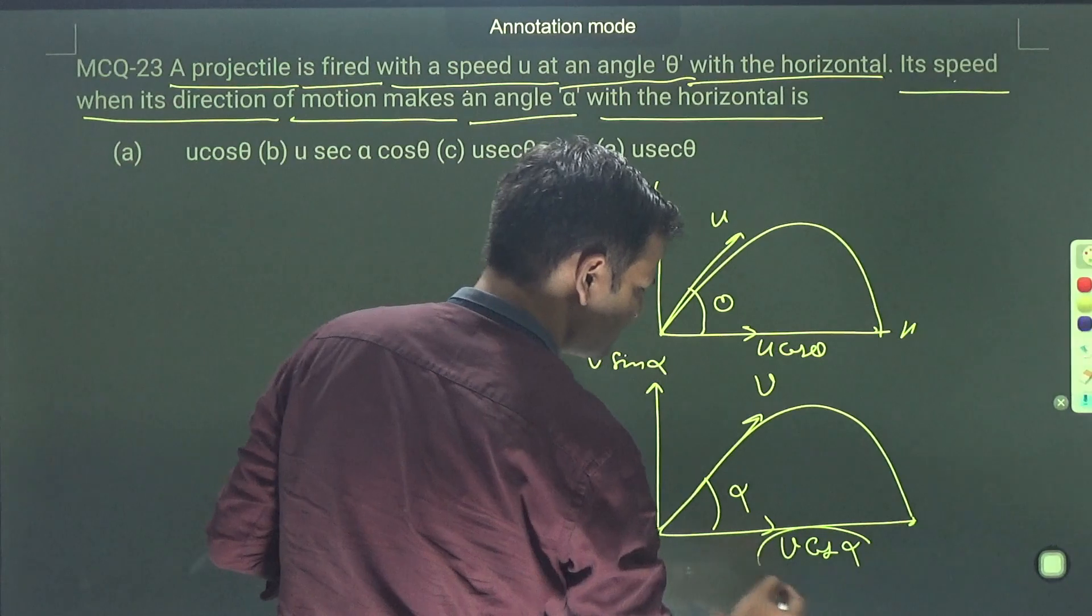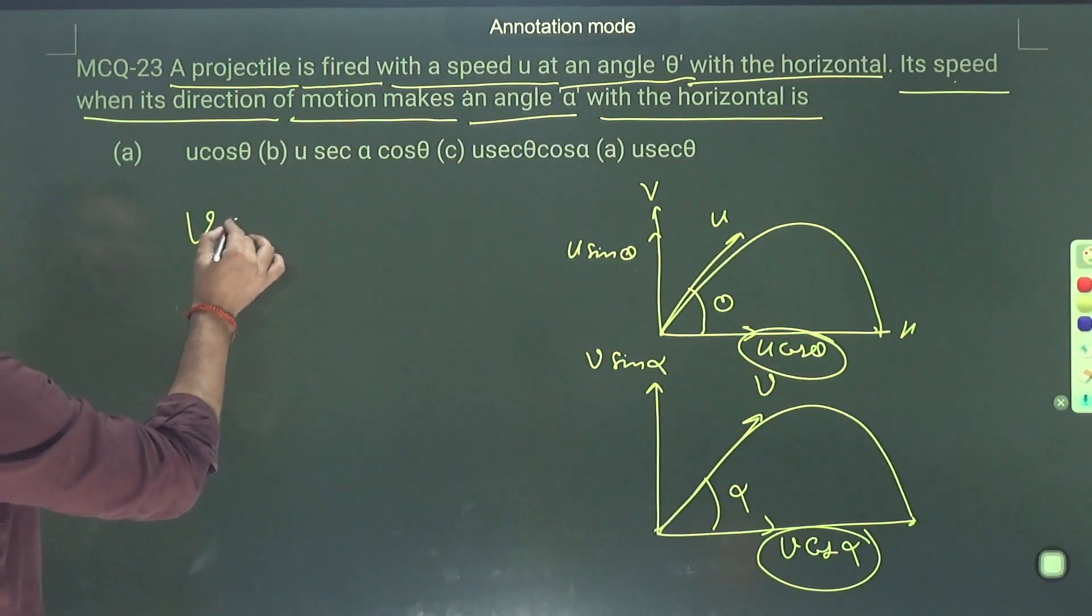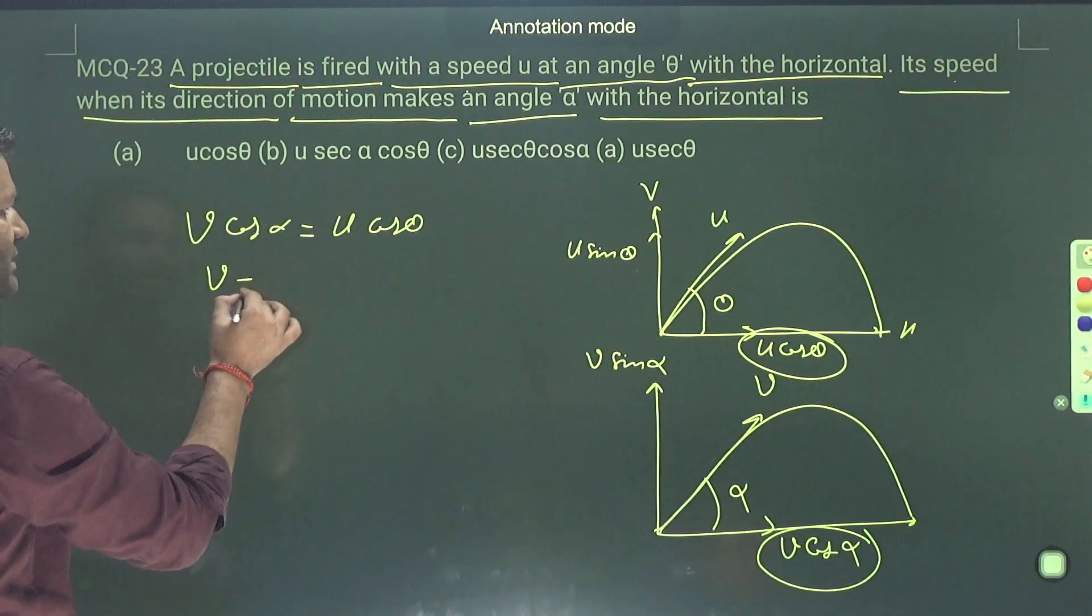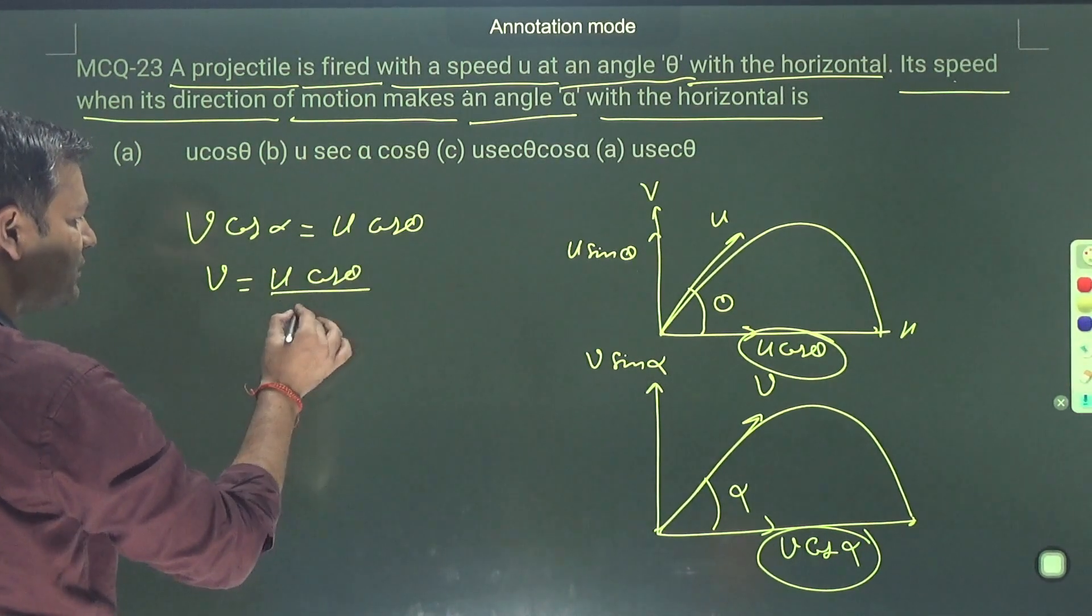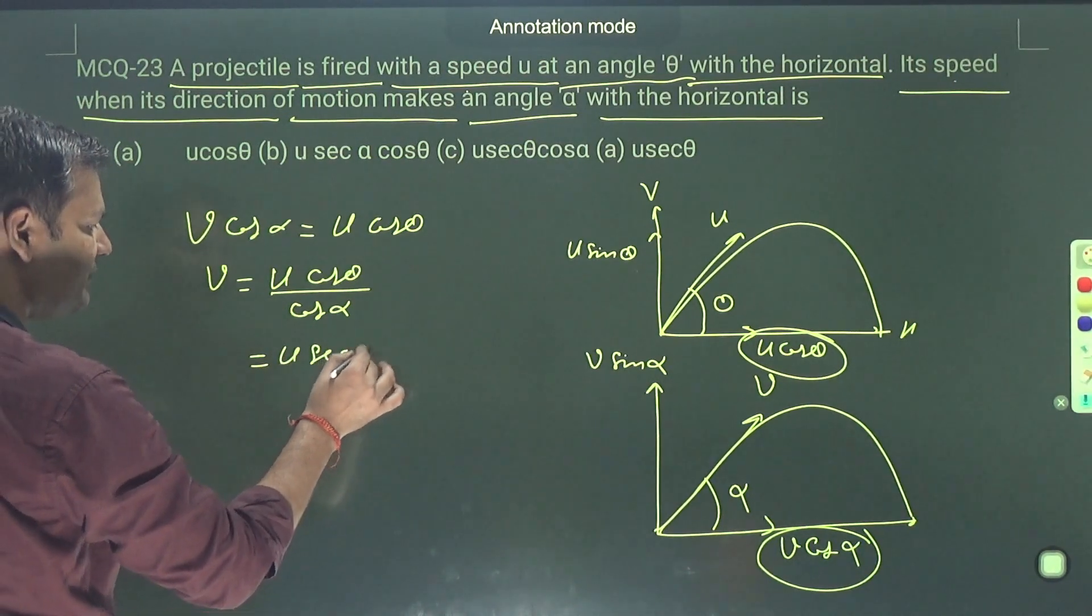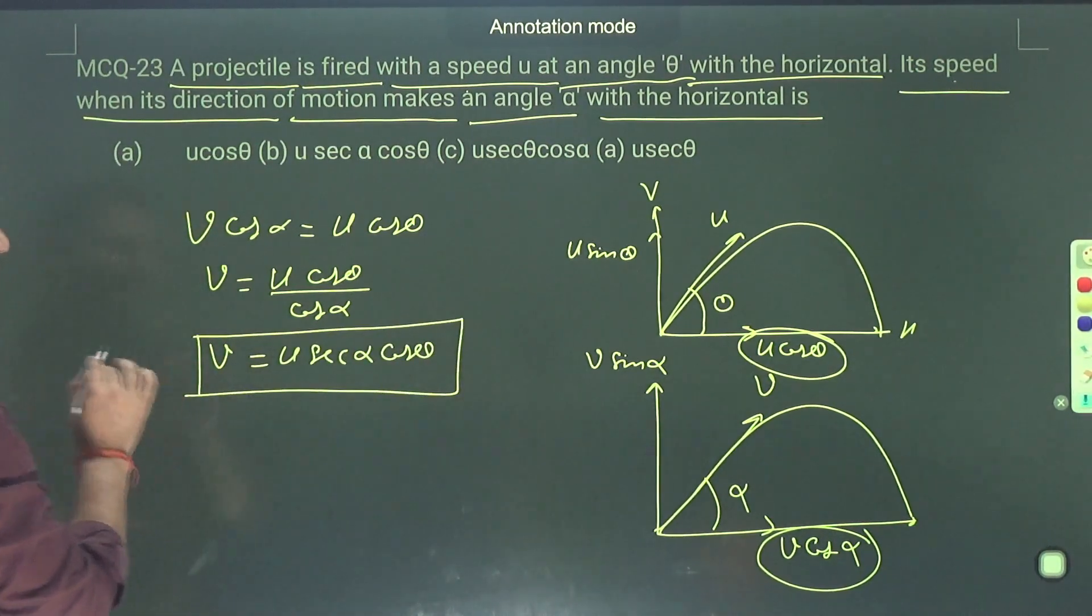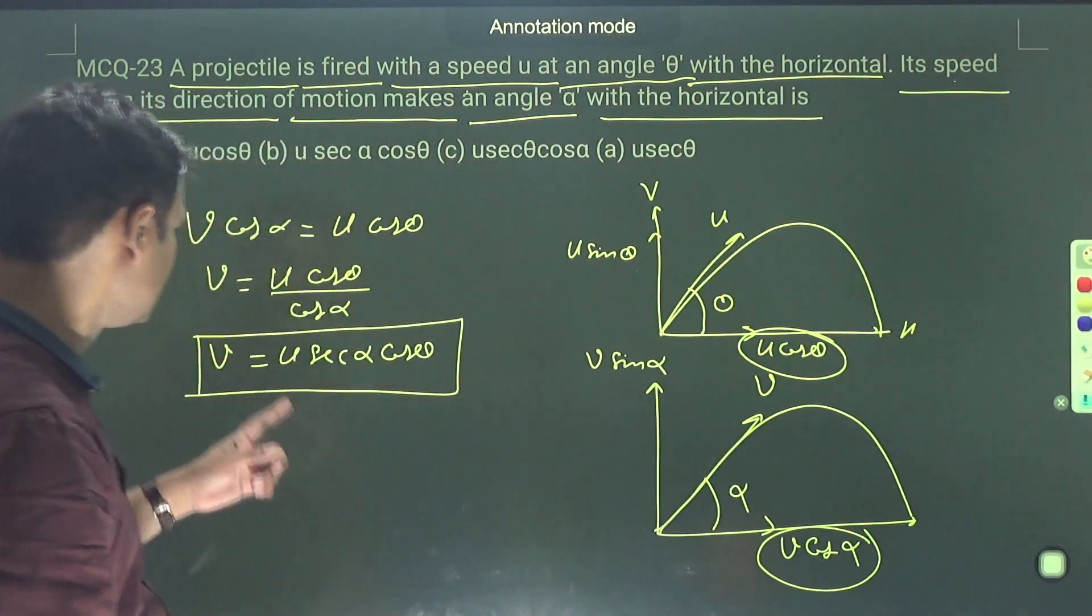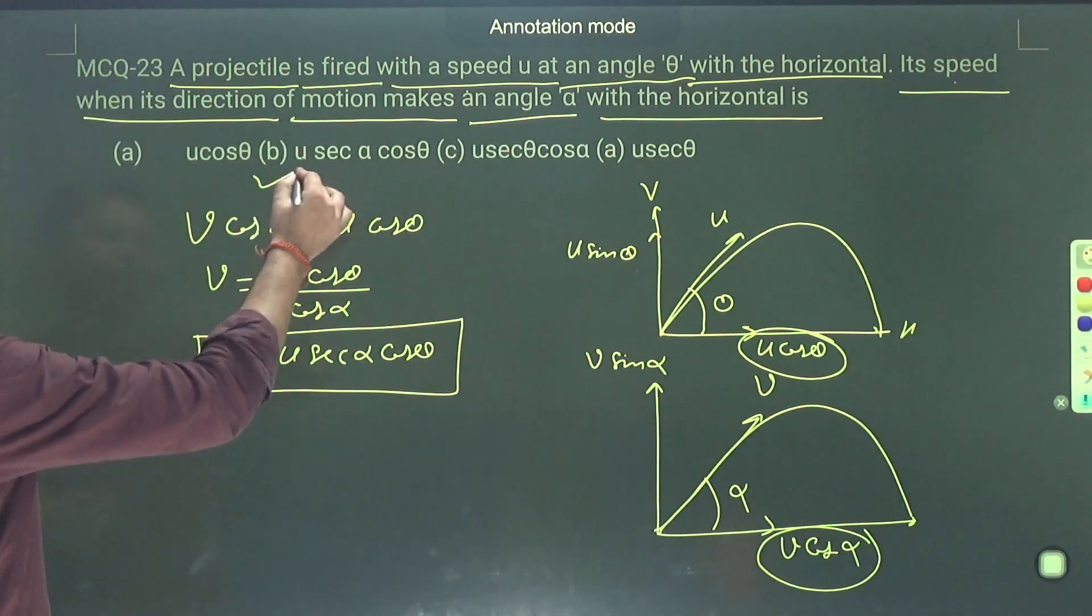This one is equal to this one. So v cos alpha is equal to u cos theta, so v is u cos theta divided by cos alpha, means u sec alpha into cos theta. That is v. So v is equal to u sec alpha cos theta. Which one is correct? v is the correct option.